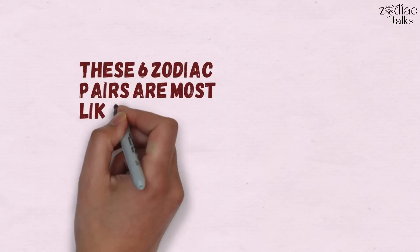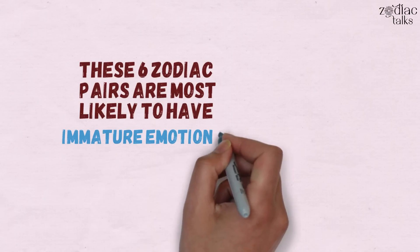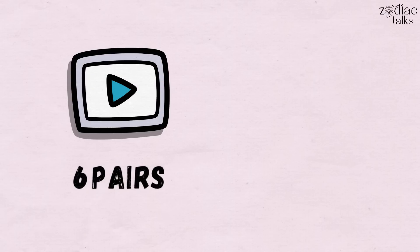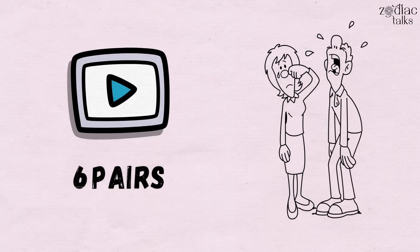These six zodiac pairs are most likely to have immature emotional relationships. In today's video, we're going to go over the six pairs that are most likely to have an immature relationship.